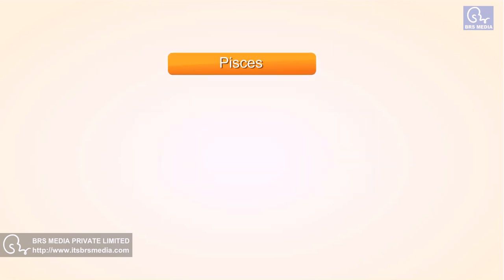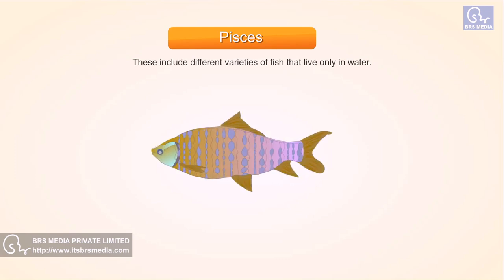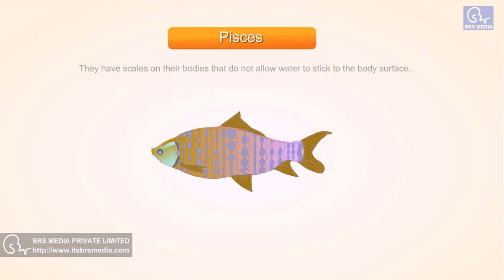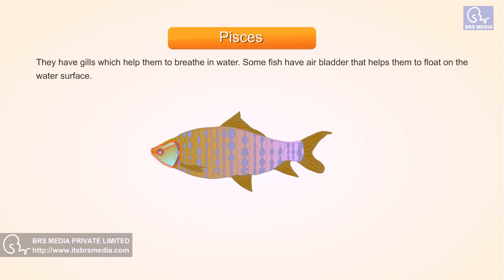Pisces. These include different varieties of fish that live only in water. They have scales on their bodies that do not allow water to stick to the body surface. They have gills which help them to breathe in water. Some fish have an air bladder that helps them to float on the water surface.